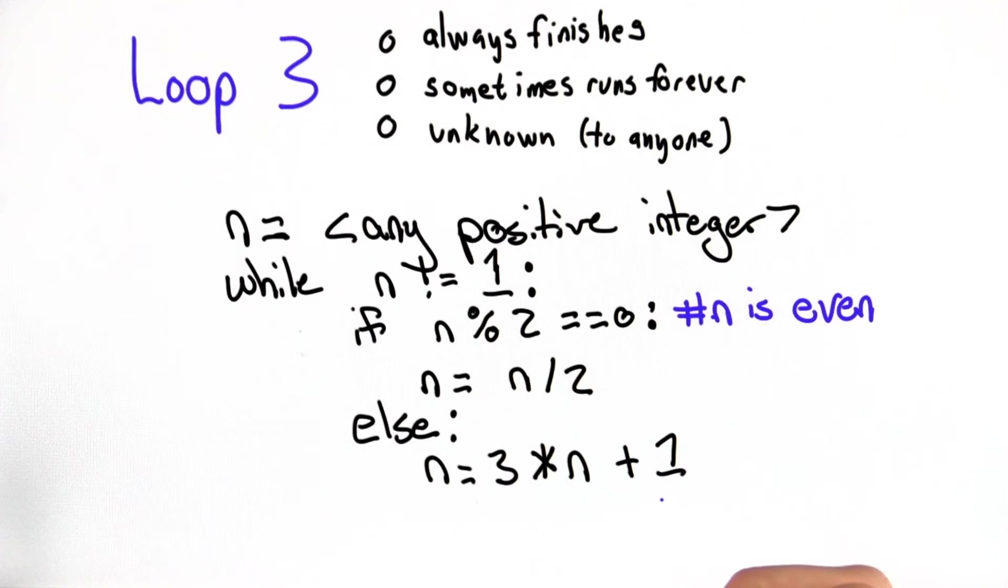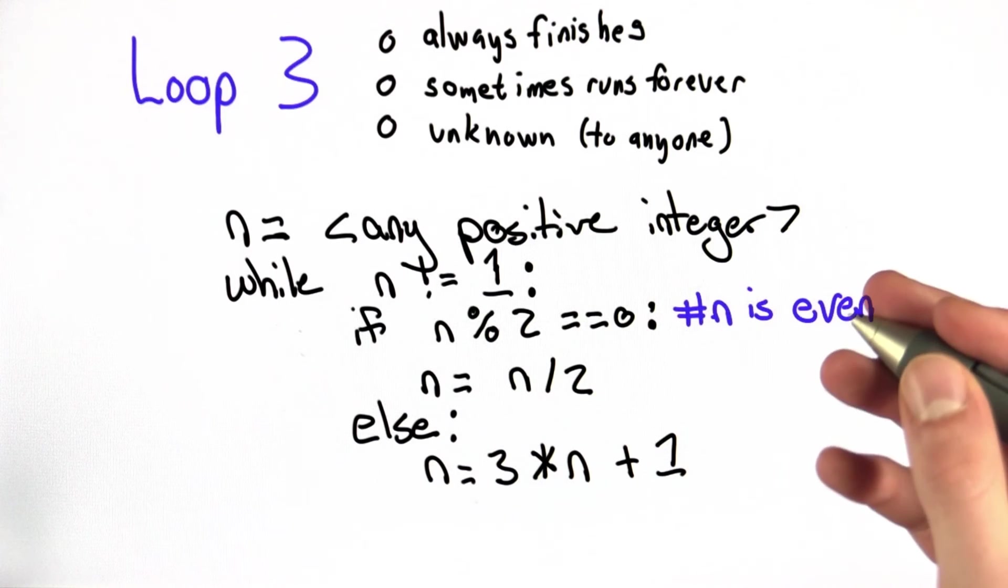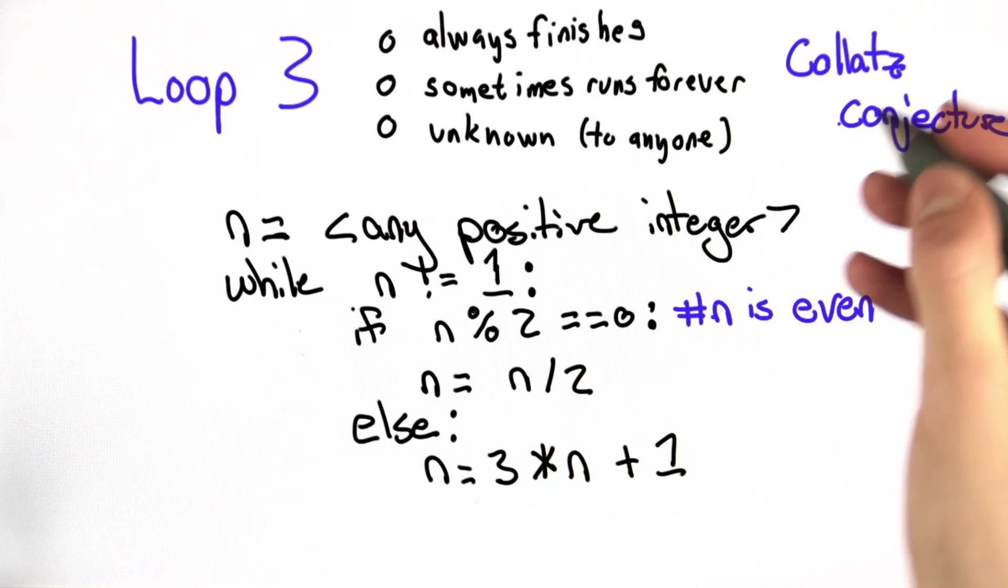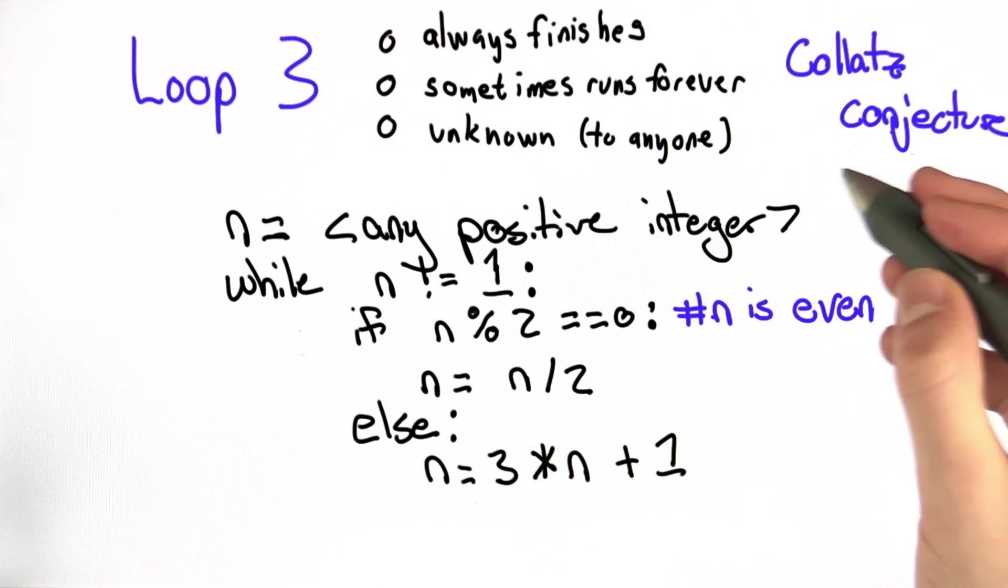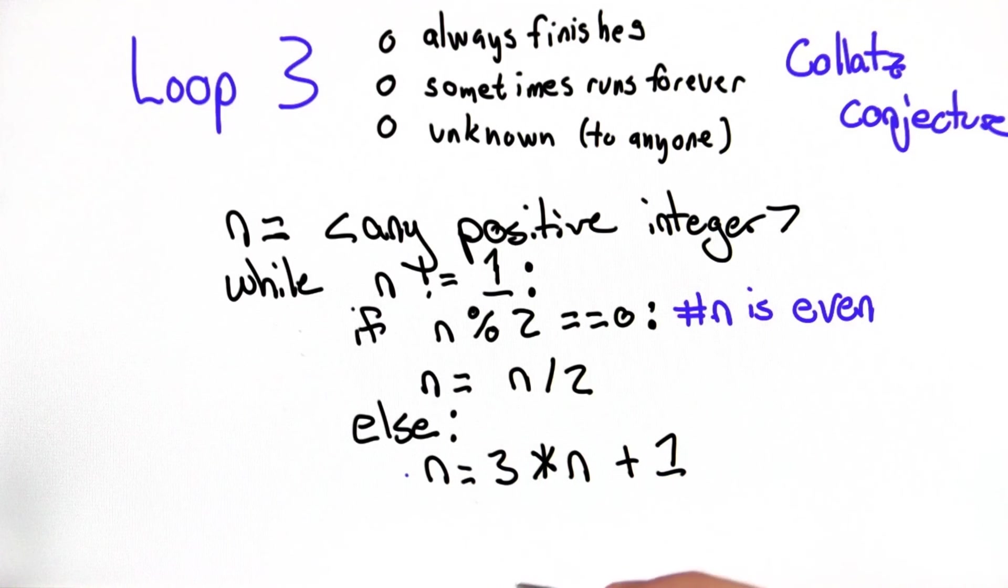This is pretty simple. However, in order to figure out whether this loop terminates, you have to solve an open mathematical problem. You have to determine whether or not the Collatz conjecture is true. The Collatz conjecture states that given any positive integer n, this code will terminate.